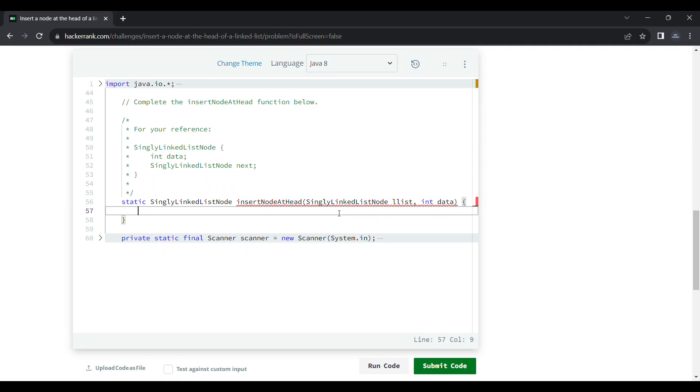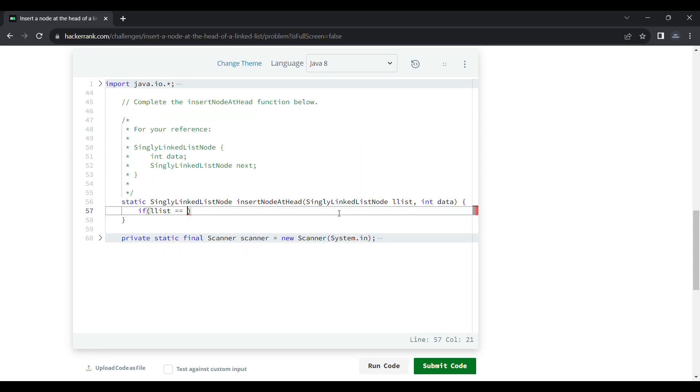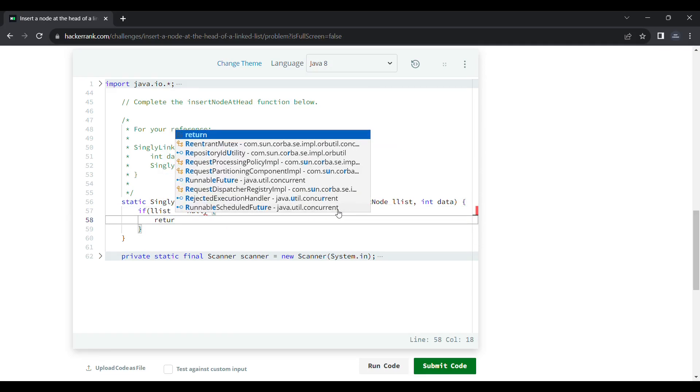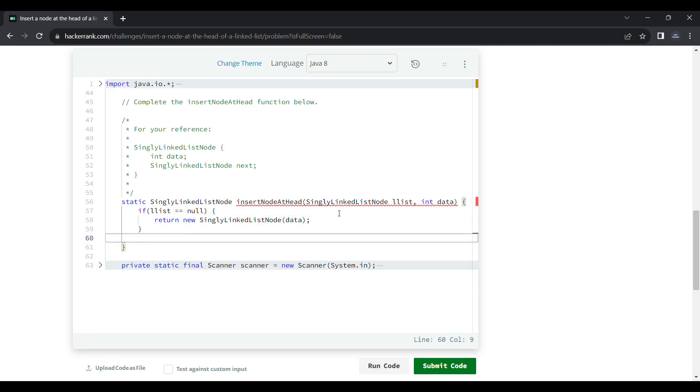In the editor, we first check if head is null. If so, we return null. Otherwise, we return a new single linked list node with the data.